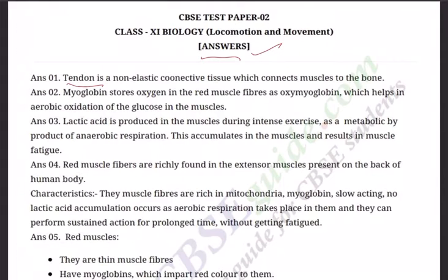Question one: The answer is tendon. Tendon is a non-elastic connective tissue that connects muscles to bone. For bone to bone, the answer is ligament. Don't get confused between ligament and tendon. Ligament does not get blood supply, so once a ligament is cut or torn, one needs to undergo an operation. Tendon, connecting muscle to bone, does have blood supply, but ligaments are very difficult to heal — so take care when running, jumping, or playing.